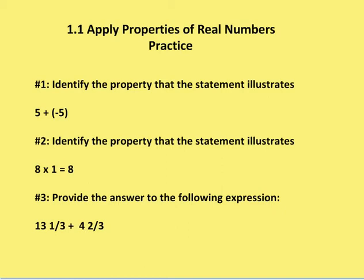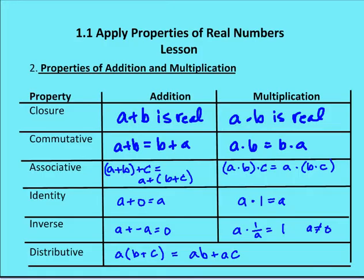So the first question says, identify the property that the statement illustrates. And here we have 5 plus negative 5. So if we go back into our list of possible properties, we're looking at the inverse property of addition because the result is going to be 0. So 5 plus negative 5 is equal to 0.